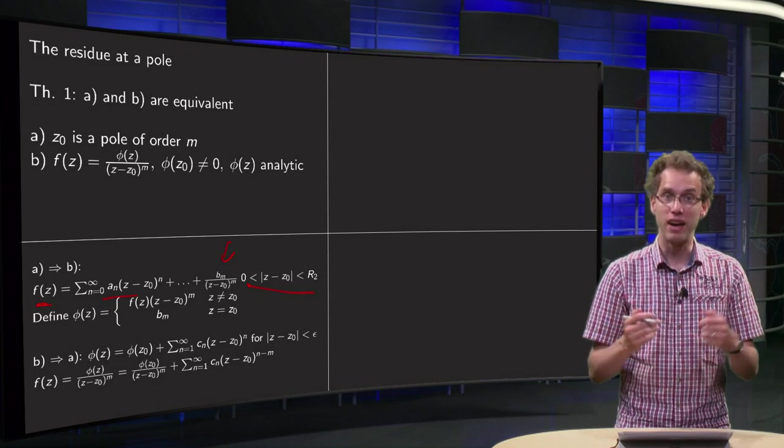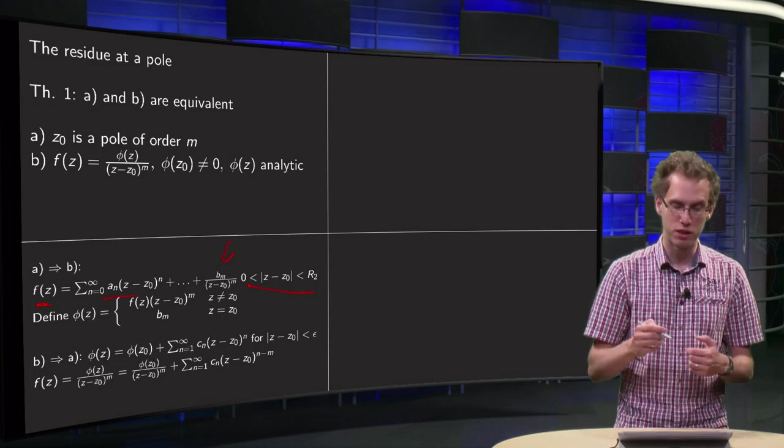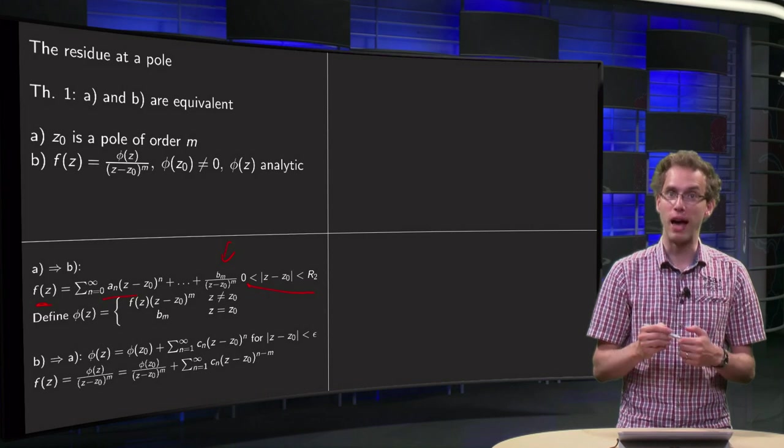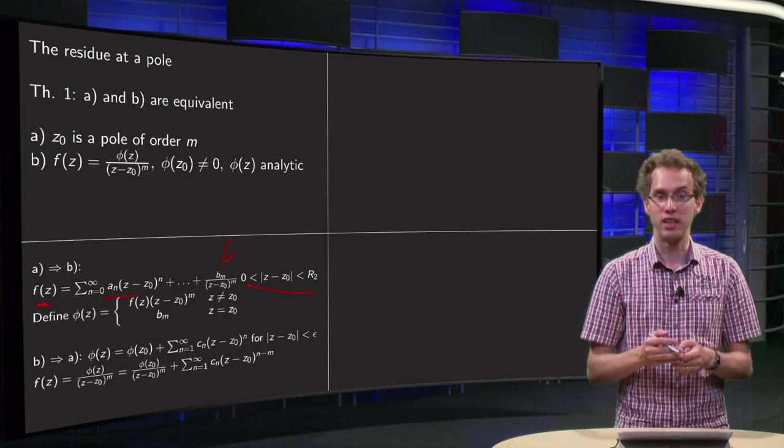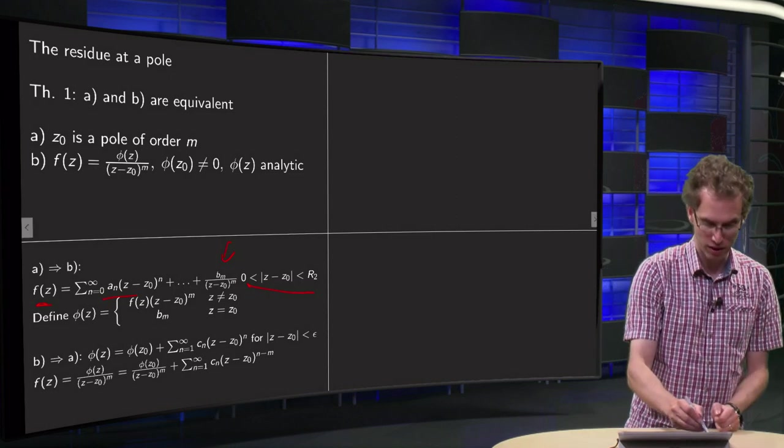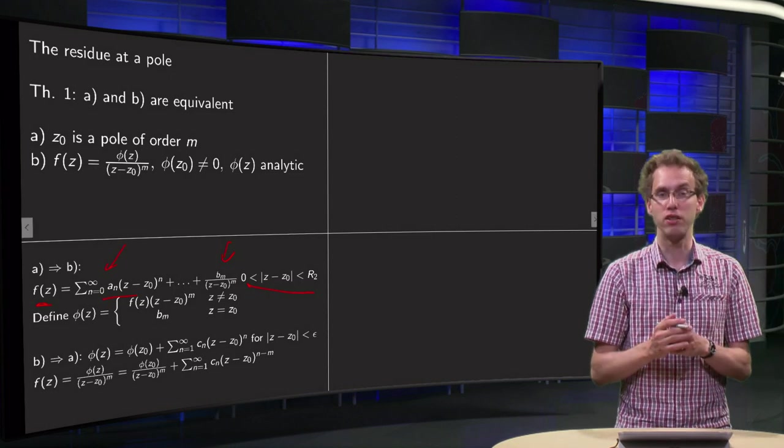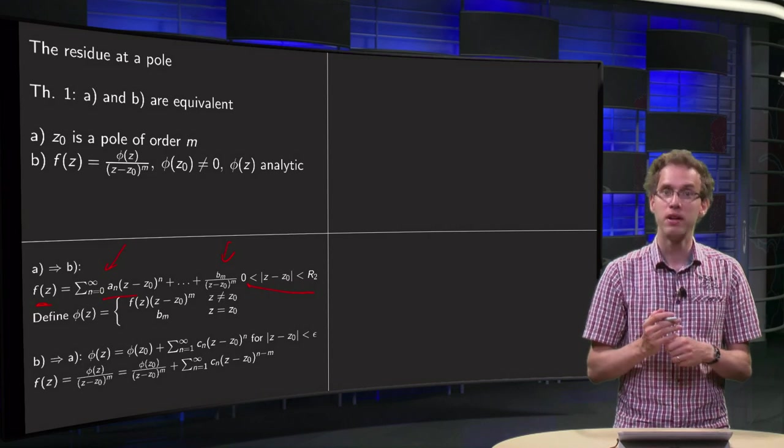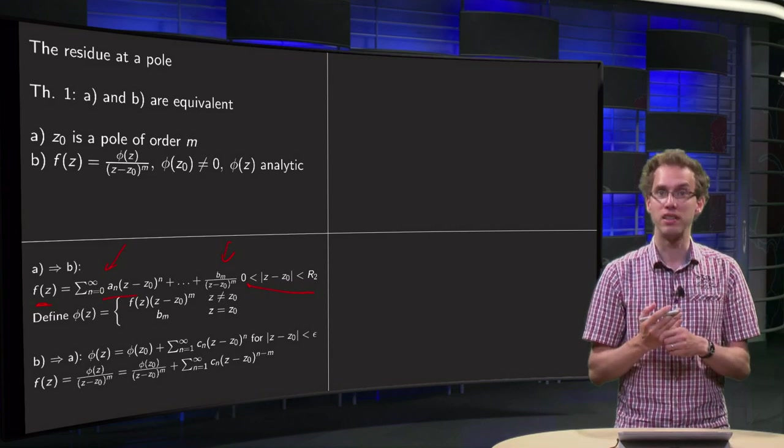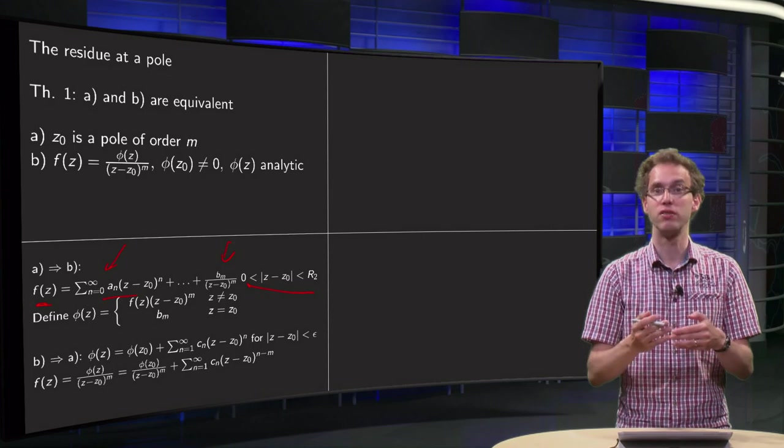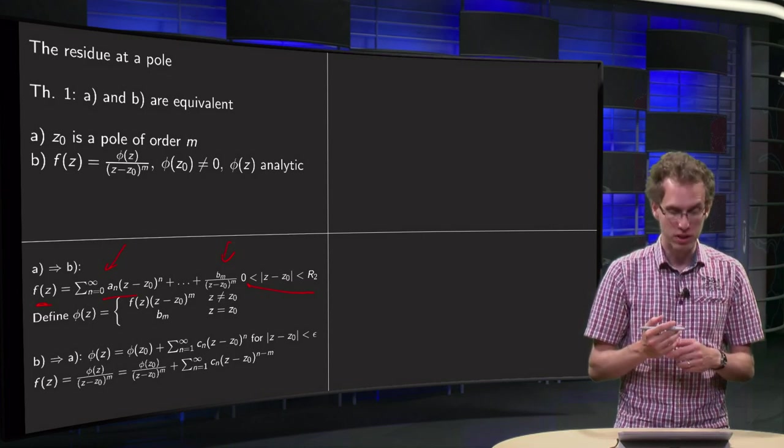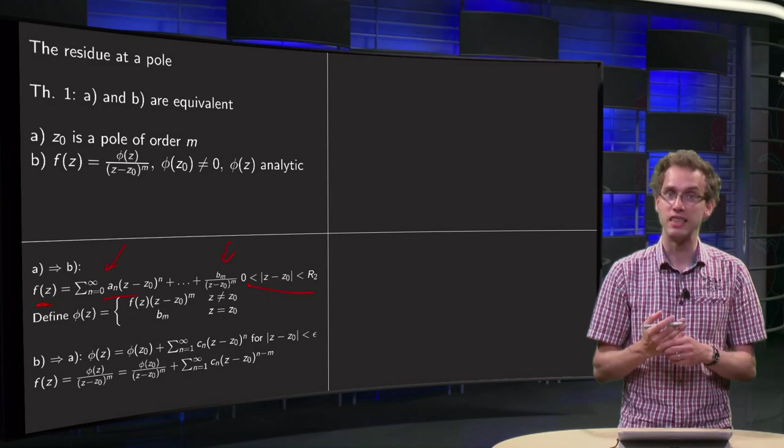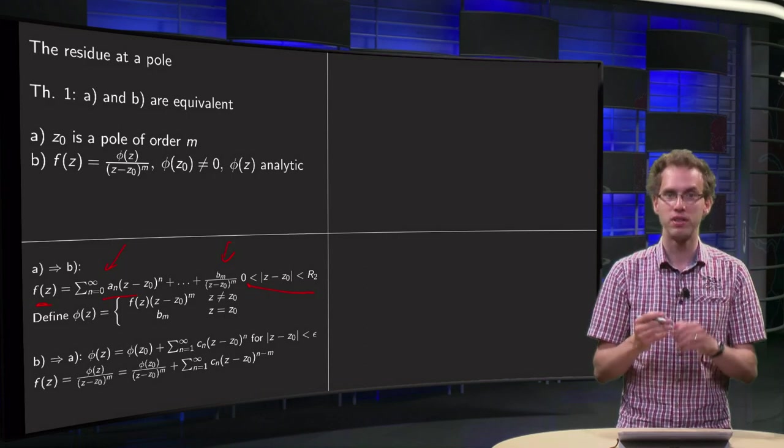Now we can define φ(z) by multiplying this by (z-z0)^m. Well, if you do that, all negative powers in your power series will all vanish and your first term will be your bm. So if you define your φ(z) in this way, you have a power series with only positive powers, which means that your φ(z) is analytic.